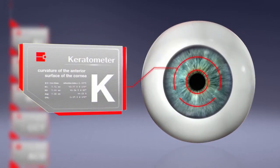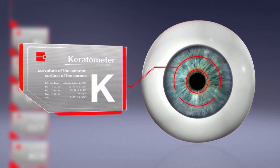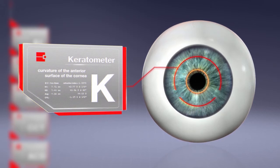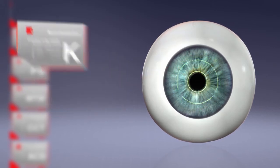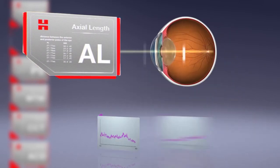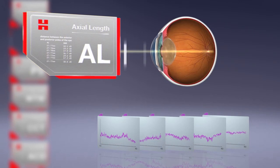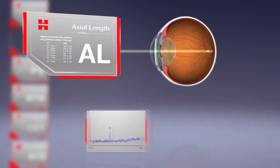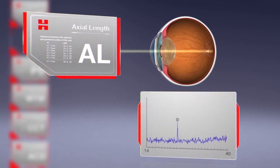The AL scan offers highly accurate keratometry measurements with a maximum of 360 data points in each of two rings. Even through dense cataracts, axial length can be measured by taking multiple readings and averaging those readings using advanced algorithms which enhance the signal-to-noise ratio.